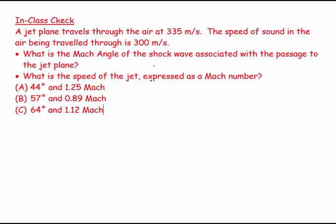Welcome. This question says a jet plane travels through the air at 335 meters per second. The speed of sound in air on this particular day is 300 meters per second. Now we have two questions: what is the Mach angle of the shockwave associated with the passage of the jet plane, and what is the speed of the jet plane expressed as a Mach number?